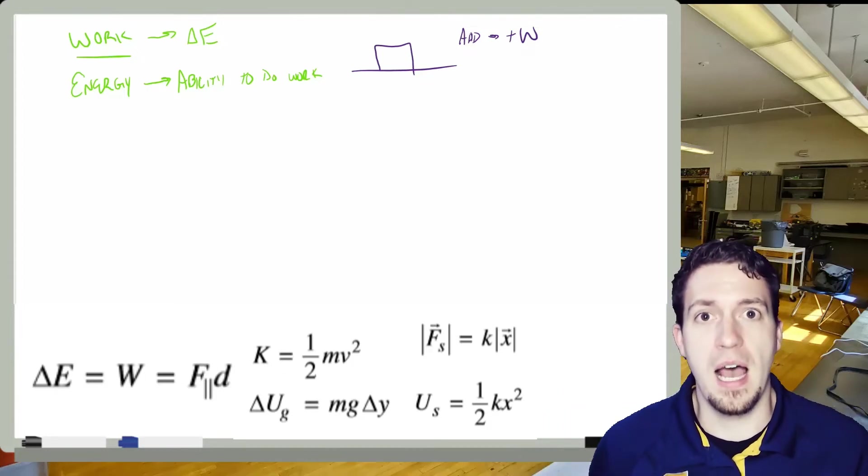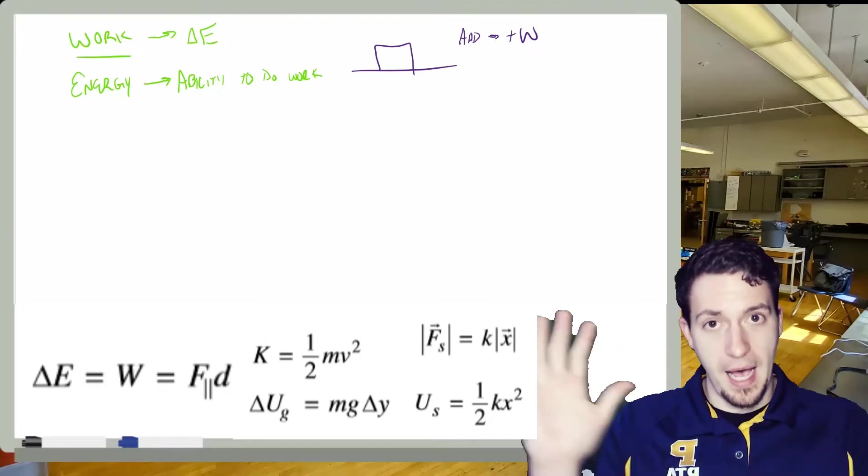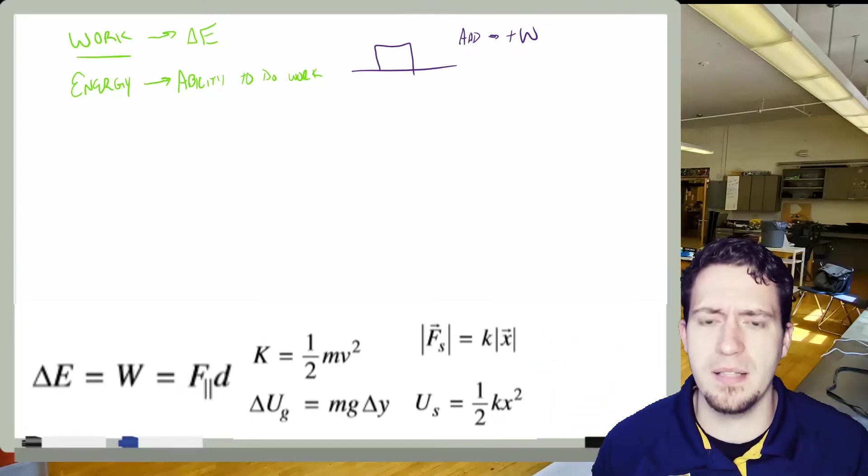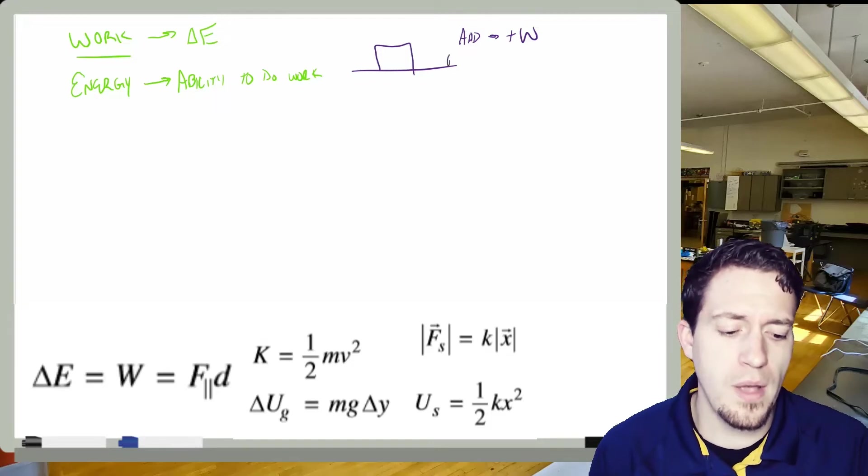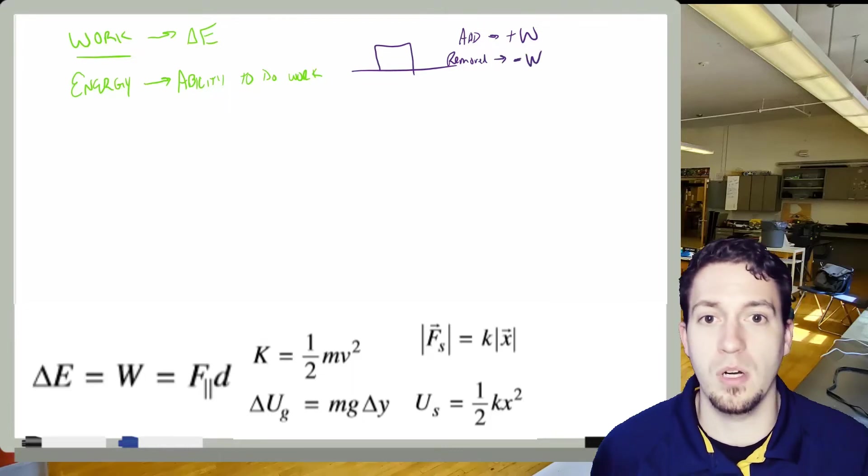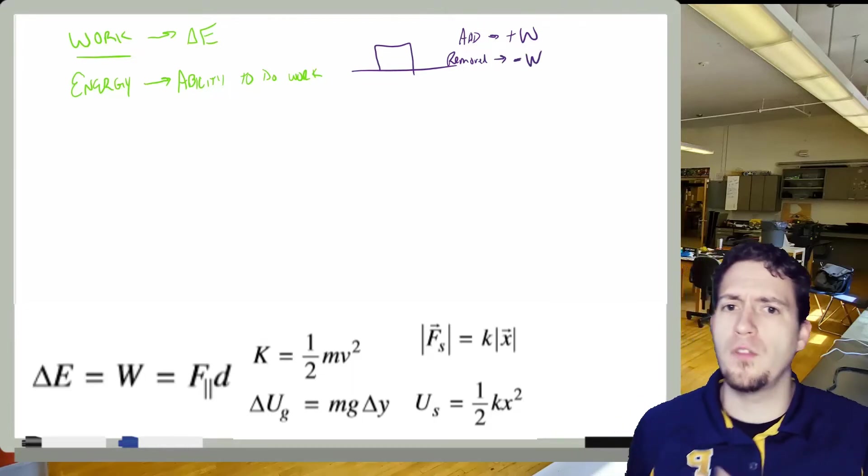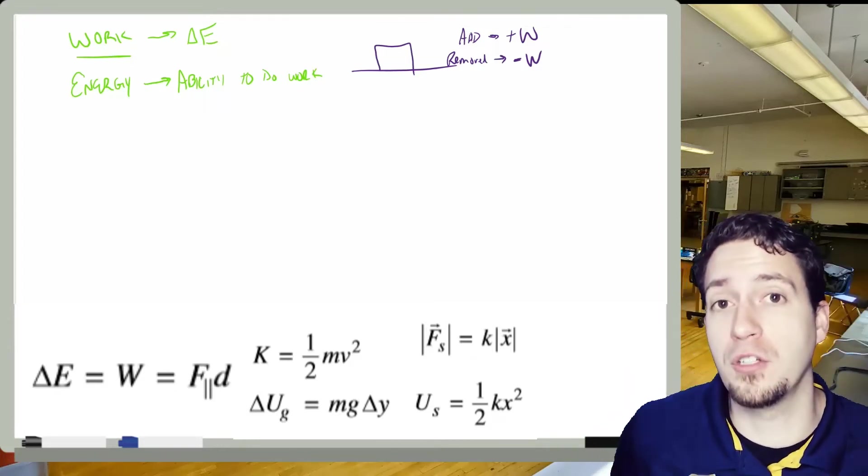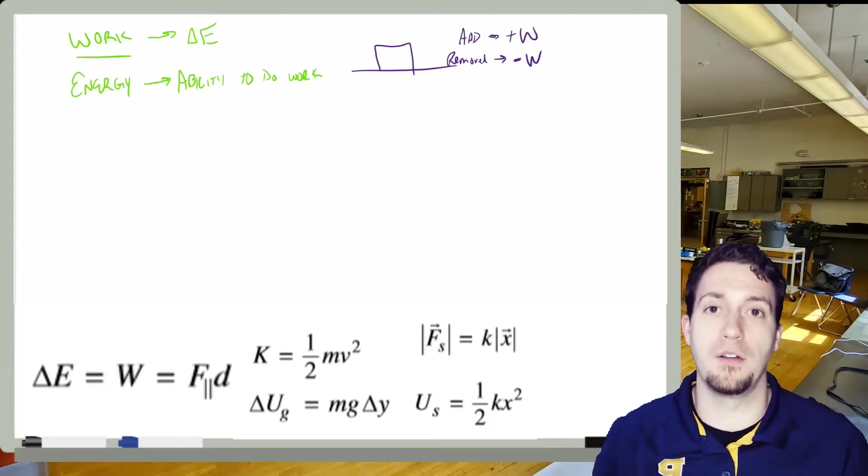But what if after I'm done pushing it, I release the block and it slows down. Now, if it's slowing down, that means that block is now losing energy. So if energy is being removed from the system or it's going out of the system, we talk about that being negative work. Now, can I do negative work? Sure. If the box is coming at me and I push against it. But more commonly, most likely that would probably be a frictional effect, right? Because friction would remove energy.